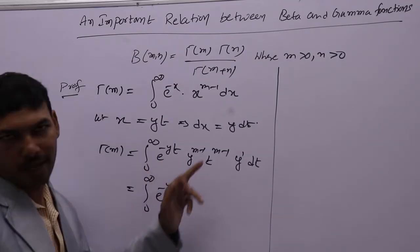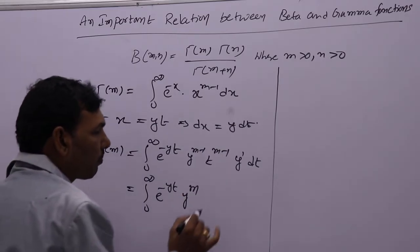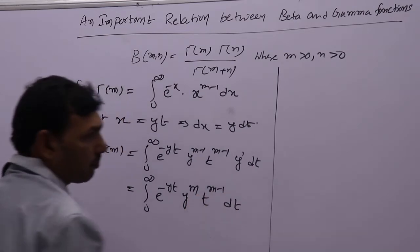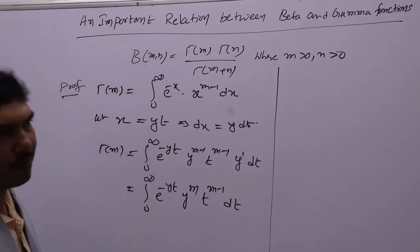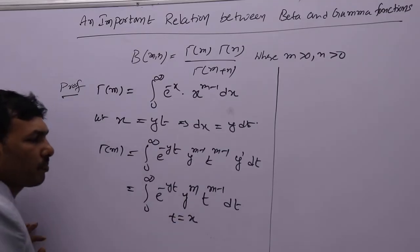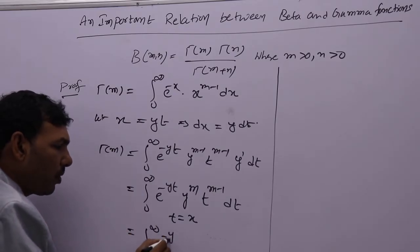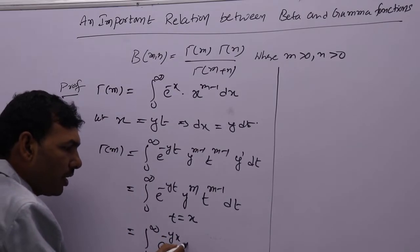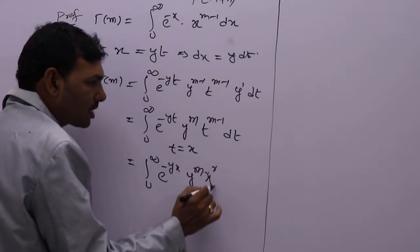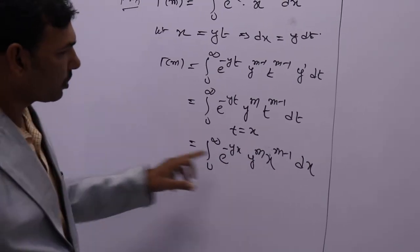Using a power m into a power n equals a power m plus n, m minus 1 plus 1 gives y power m — the 1's cancel. So you have y power m, t to the power m minus 1 into dt. Now, writing t as x, dt becomes dx: integral 0 to infinity, e to the power minus yx, into y power m, into x power m minus 1 dx.